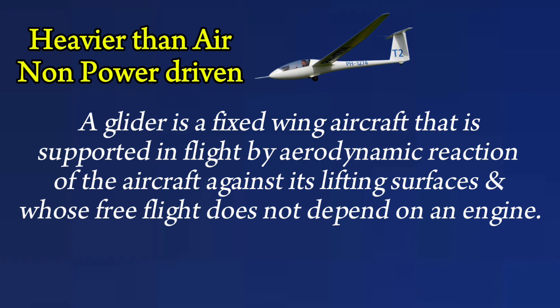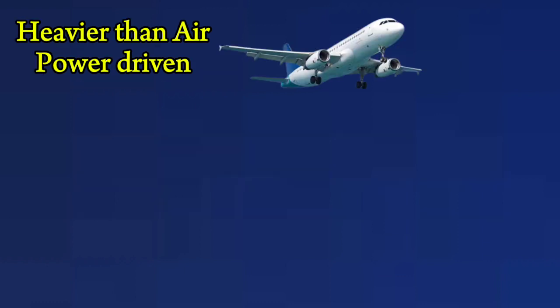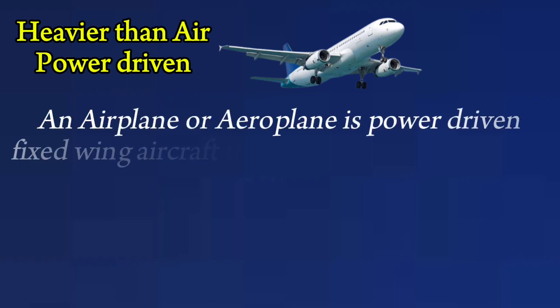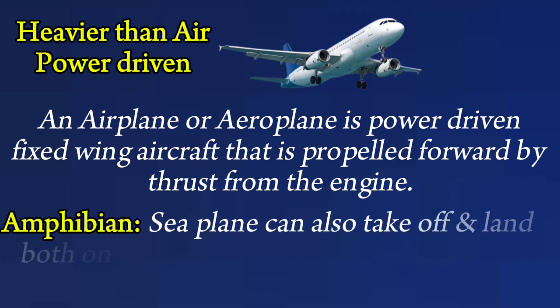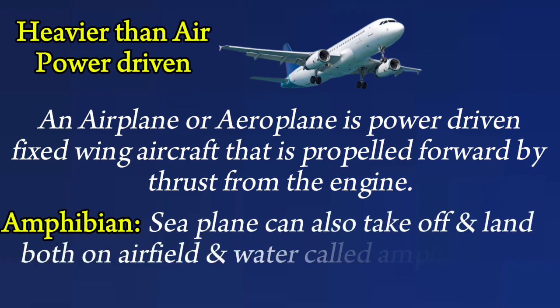Heavier-than-air power driven: an airplane or aeroplane is a power-driven fixed-wing aircraft that is propelled forward by thrust from the engine. An amphibian or seaplane can take off and land both on an airfield and on water — these are called amphibians.